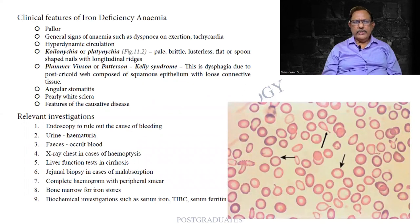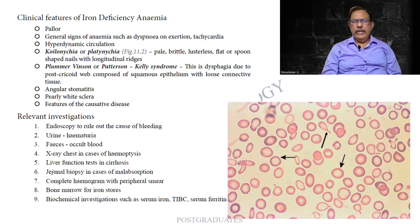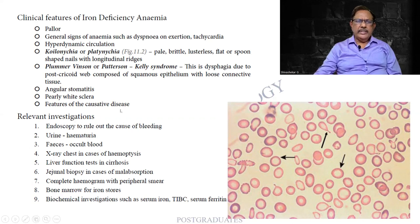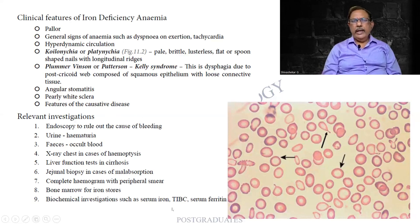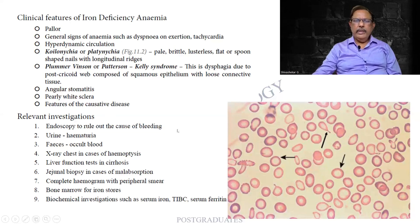This is of paramount importance. What are the features of iron deficiency anemia? Some of these can be given as a clue in problem-based questions — for example, koilonychia, or a patient having Paterson-Kelly or Plummer-Vinson syndrome, of course pallor, etc. For investigations, students often write only the peripheral smear — you must develop your investigations further. For example, for bleeding you can do an endoscopy and fecal occult blood test.